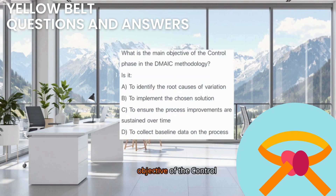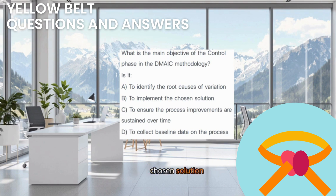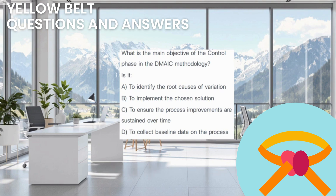What is the main objective of the Control phase in the DMAIC methodology? Is it: A. To identify the root causes of variation. B. To implement the chosen solution. C. To ensure the process improvements are sustained over time. D. To collect baseline data on the process. Think about holding the gains.